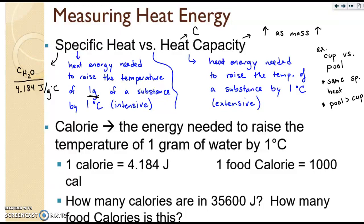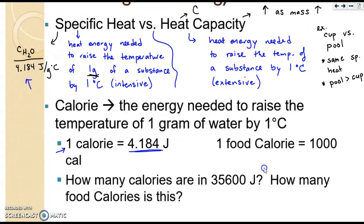A couple more definitions and then we'll do a little bit of math. A calorie is defined as the energy needed to raise the temperature of one gram of water by one degree Celsius. So you'll notice that one calorie right here equals 4.184 joules, which matches perfectly with the specific heat of water. One food calorie is actually a thousand real calories. So that 2,000 calorie diet that we talk about really is a 2,000,000 real calorie diet. Interesting.